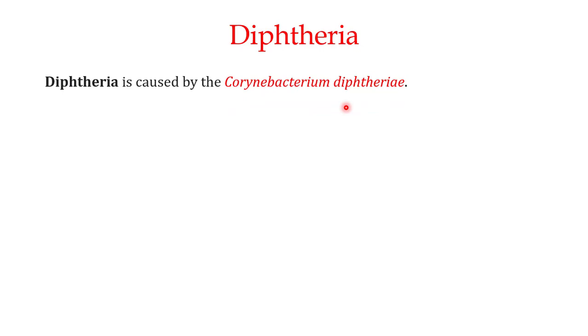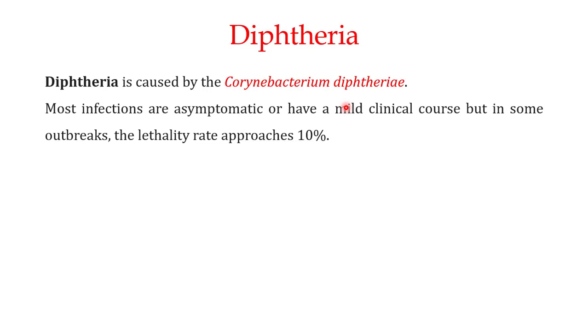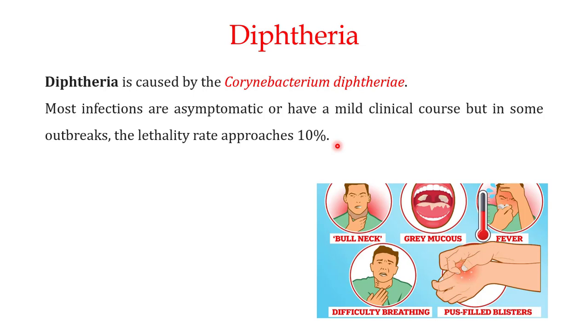The second important example in this video is diphtheria — anti-serum can be used for the treatment of diphtheria. Diphtheria is caused by Corynebacterium diphtheriae. Most infections with Corynebacterium diphtheriae are asymptomatic or have a mild clinical course, but in some outbreaks the lethality rate can approach up to 10%, which is a very high rate.